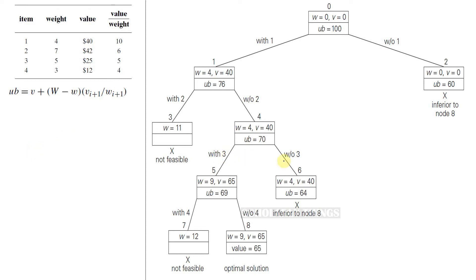Next let's consider with and without item 3. So far we have included item 1, excluded item 2, and let's now include item 3 and check. If we include item 3, the total weight will be 4 plus 5, that is 9, and the value will be 40 plus 25, that is 65. Let's calculate upper bound: value is 65, 10 minus weight is 9, value to weight ratio for next item is 4. 65 plus 4 is 69. So this is the upper bound at this node 5.